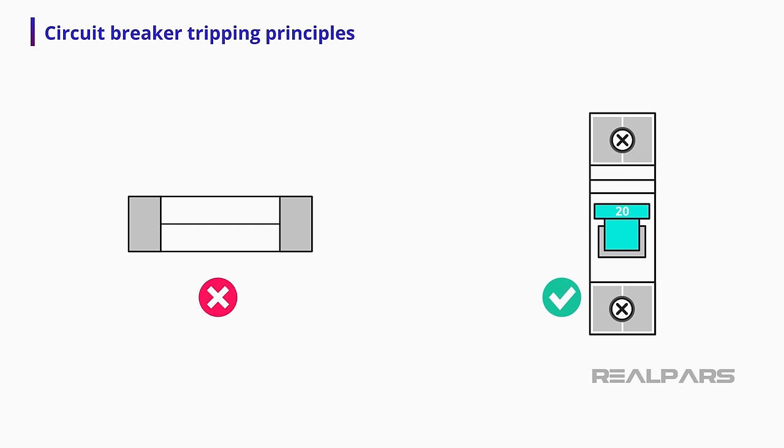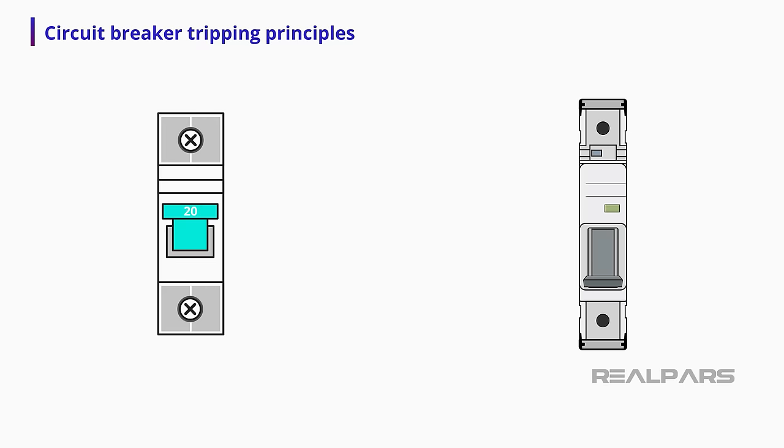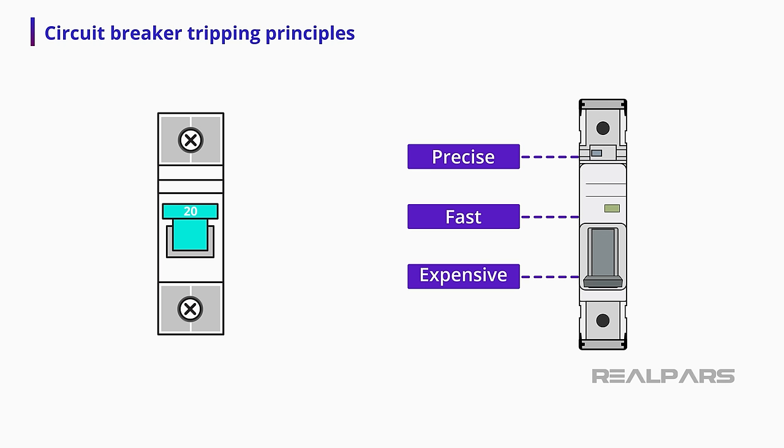Differently from fuses, once the issues that cause the circuit breaker to trip have been addressed, you can switch it back to the on position, and your circuit is once again protected. Numerous advanced circuit breakers are available on the market. They can be much more precise and can trip at much faster speeds. However, they are also much more expensive.